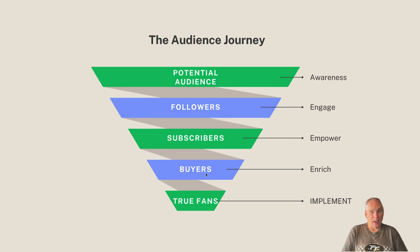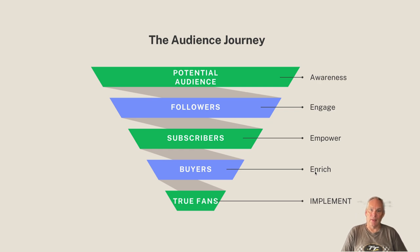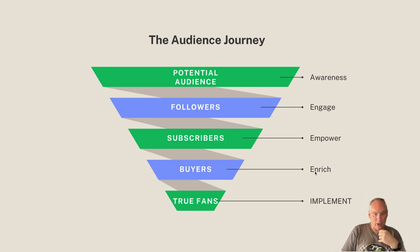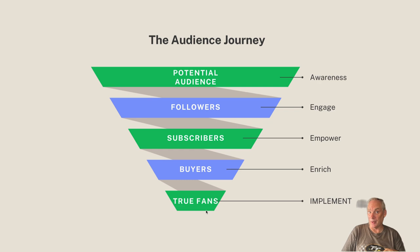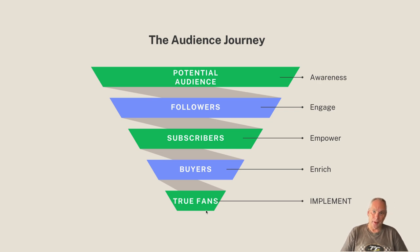Then we have the buyers. These are people who will buy your small courses and join your community. Your job with them is to enrich them — you want them to make more money than they're spending on your products. You want them to get up to a thousand dollars a month, two thousand dollars a month, etc. Finally, you will have what are called true fans. You only need about 500 or fewer, maybe up to a thousand of these over time. These are people that will buy pretty much everything you publish, and your job with them is to help them get to those six-figure incomes.